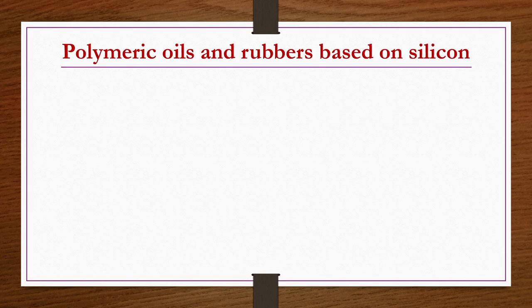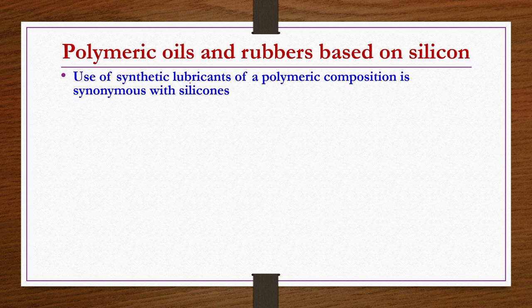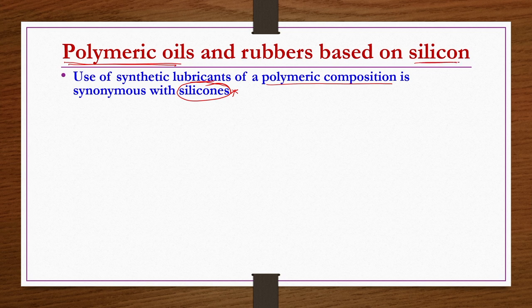In this lecture we will be discussing polymeric oils and rubbers based on silicones. Polymeric oils are nothing but synthetic lubricants of a polymeric composition, also known as silicones. So synthetic lubricants of polymeric composition is synonymous with silicones. Most of these lubricants are based on the silica component.